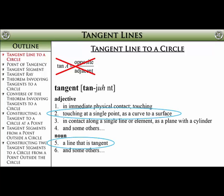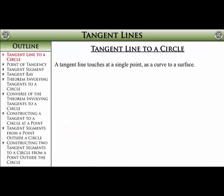Instead of opposite over adjacent, we want to think about a line that touches at a single point, as a curve to a surface. So with that in mind, we want to think about tangents as they apply to circles.